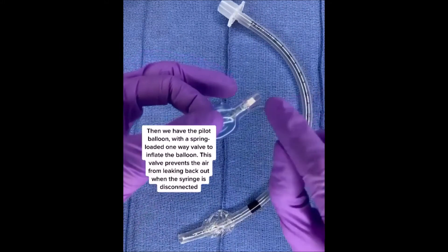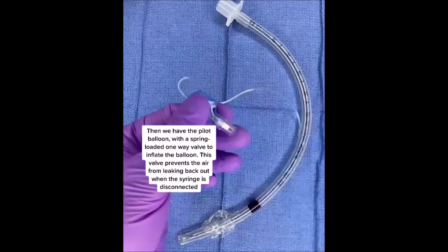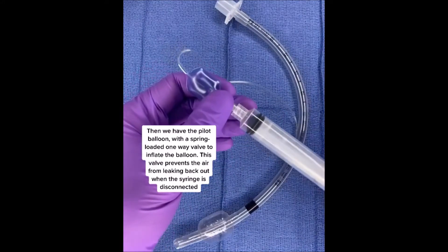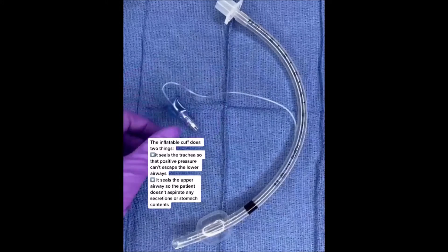Then we have the pilot balloon with a spring-loaded one-way valve to inflate the balloon. This valve prevents the air from leaking back out when the syringe is disconnected. The inflatable cuff does two things.